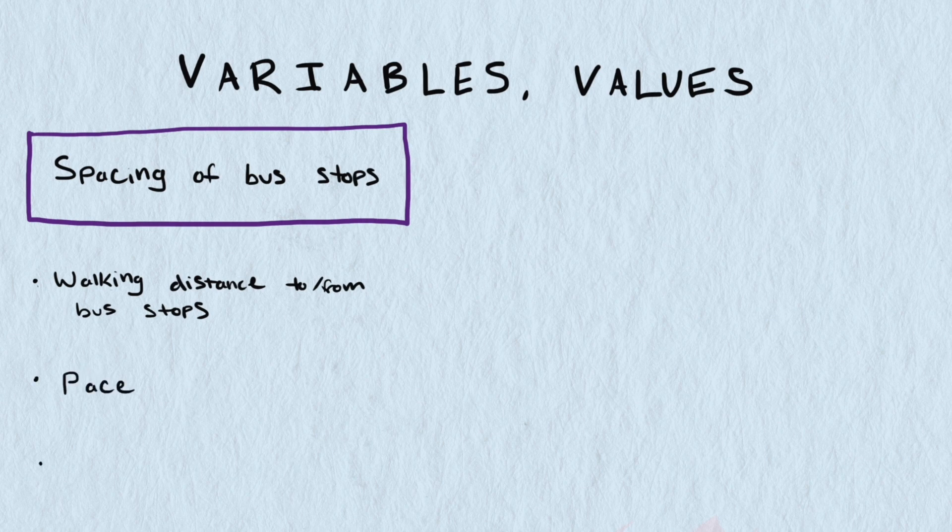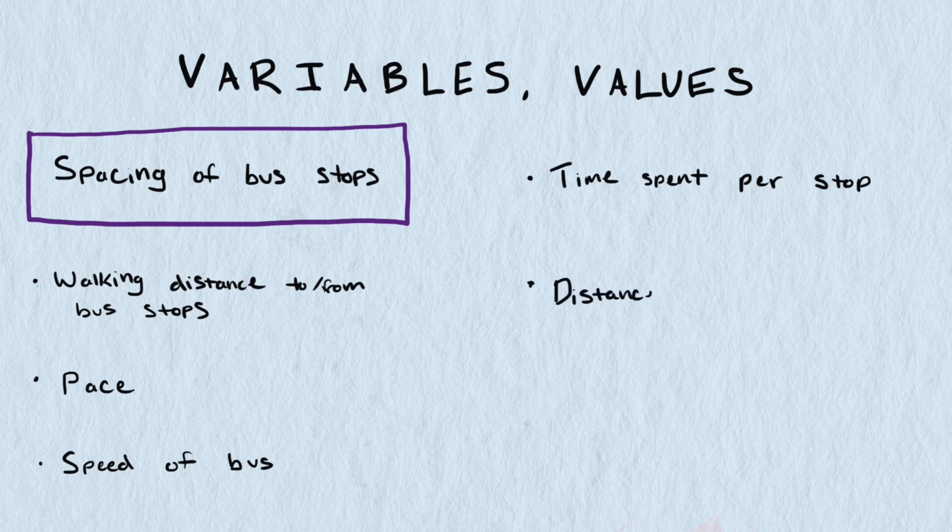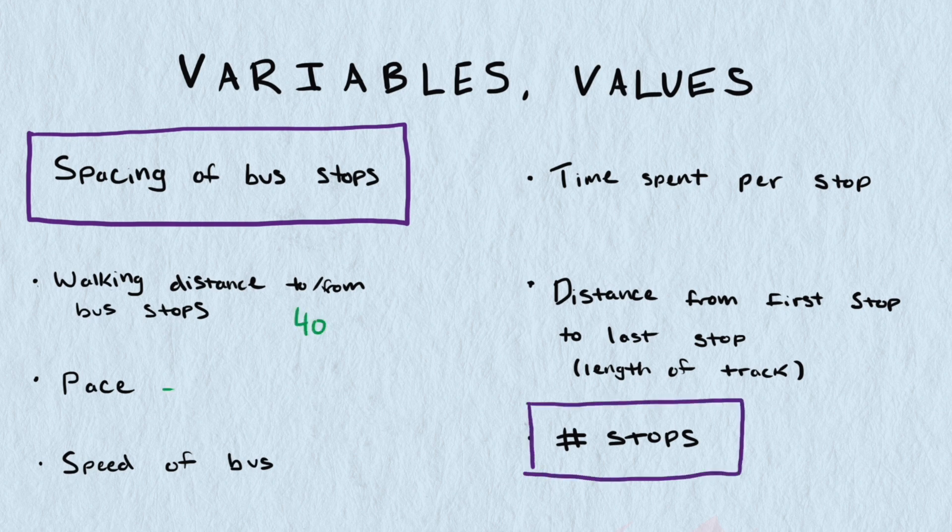The distance a person walks to the bus stop and walks from the bus stop to their final destination at the other end of their journey. The pace someone walks. The speed of the bus. The length of time the bus stops at each stop to load and unload passengers. The distance from the first stop to the last stop. And the number of stops. The number of stops is connected to the spacing of the stops but every other variable we can pick a reasonable value for.